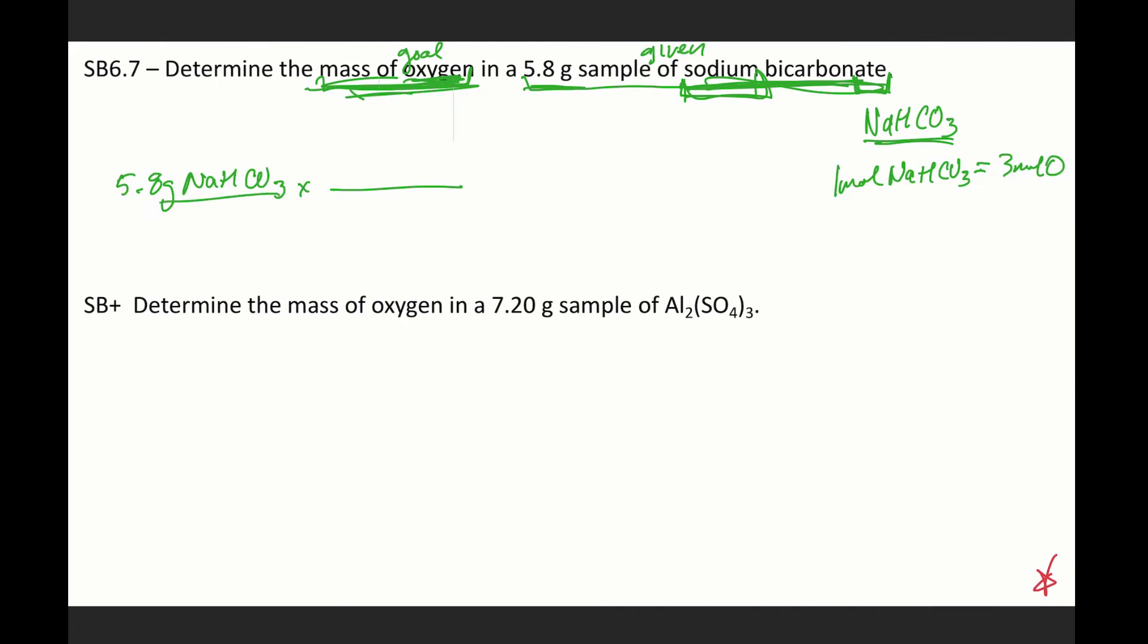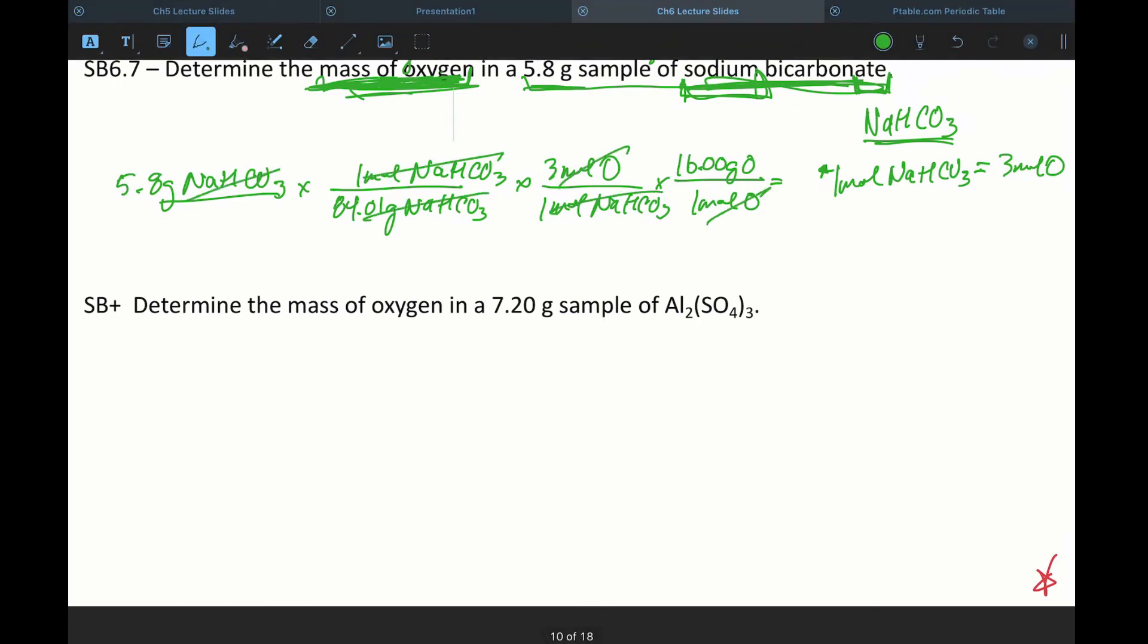So I can't use that until I get to moles, which means I need to use the molar mass. So we have 84.01 grams of NaHCO3 for every one mole of NaHCO3. And then for every one mole of NaHCO3, there are three moles of oxygen. And I know now if I want to get to grams of oxygen, I'm just going to use the molar mass of oxygen. So one mole of oxygen is 16 grams of oxygen. And we'll see that my moles of oxygen cancel, moles of bicarbonate, grams of bicarbonate, I'm left with grams of oxygen.